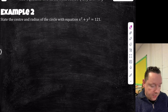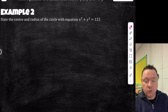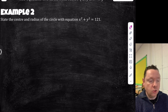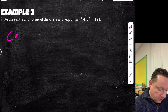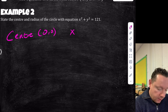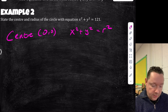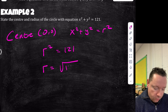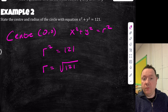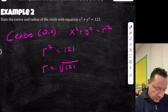Example 2: state the centre and radius of the circle x² + y² = 121. We know the centre is (0,0) because it's in the form x² + y² = r². Then r² = 121, so the radius is the square root of 121, which is 11.